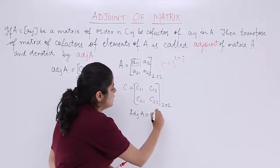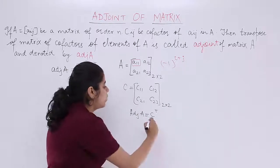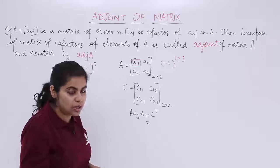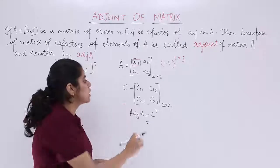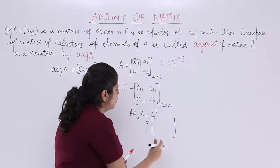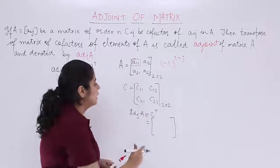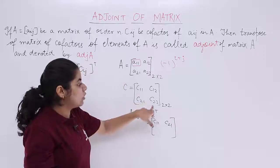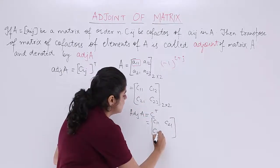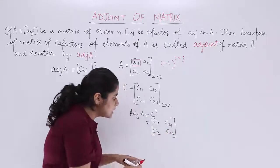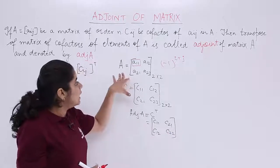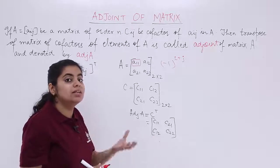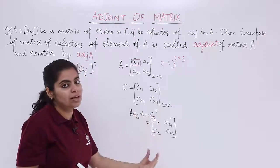Adjoint of A is the transpose of C. Transpose means interchange the rows with the columns and the columns with the rows. So if you have C11 and C21 as the first column, this will now become your first row. The second column becomes the second row, giving C12 and C22. This is what the adjoint is: for any given square matrix, the adjoint is the transpose of the cofactor matrix.